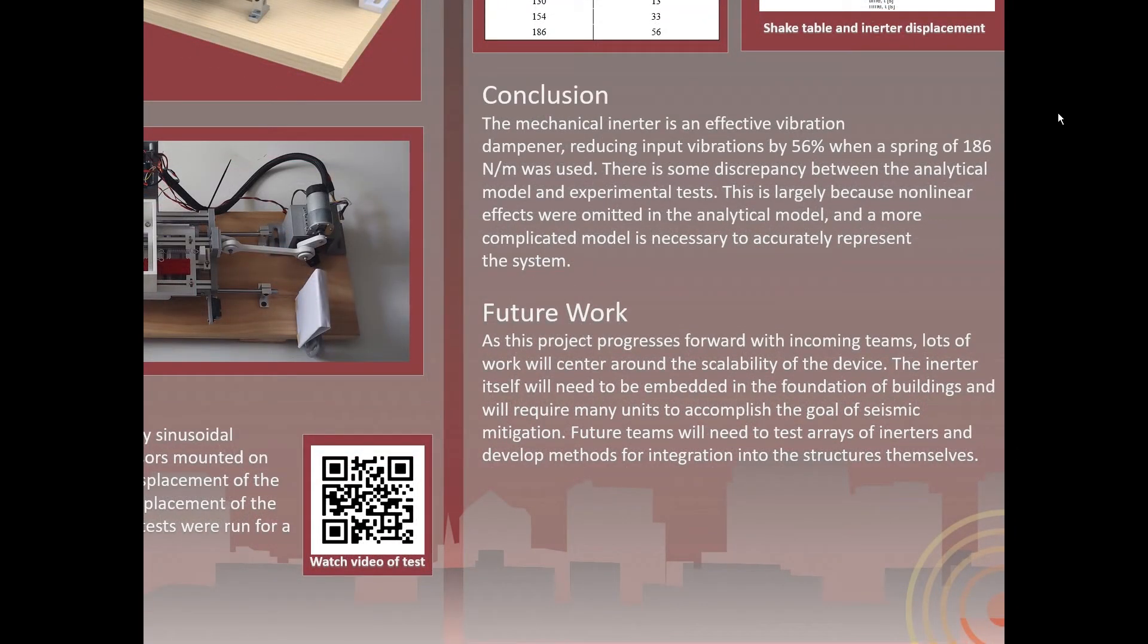So the conclusion of our project is that we were able to make an effective mechanical inerter. We were able to reduce input vibrations by 56%, and that was with a spring coefficient of 186 Nm. There was a little bit of discrepancy between our analytical model and our experimental tests. This was mostly due to our neglecting of the nonlinear effects in the system. This will require a little bit more work to flesh those out and get a more complete analytical model.